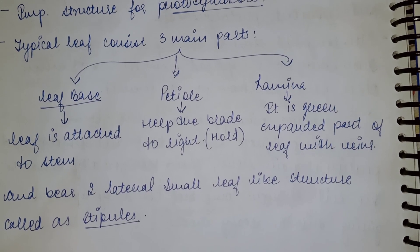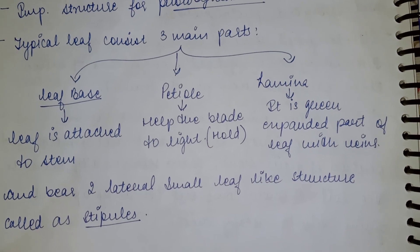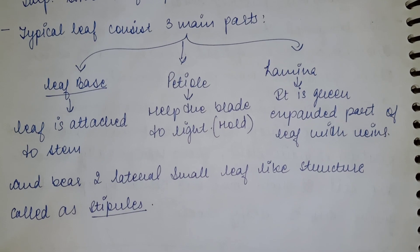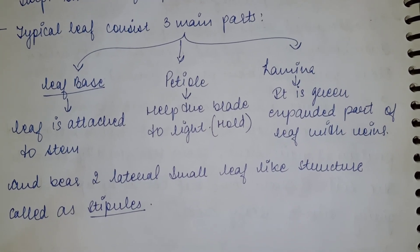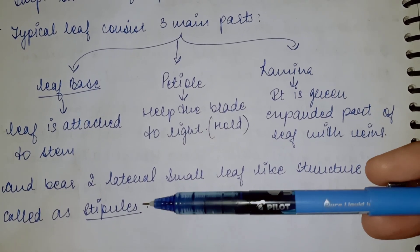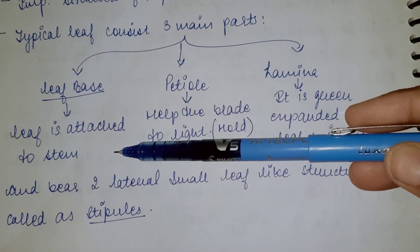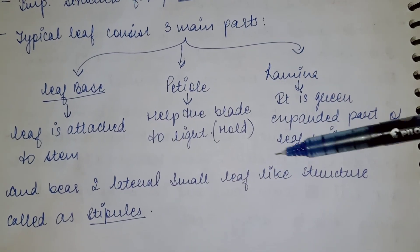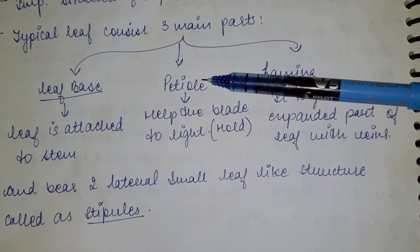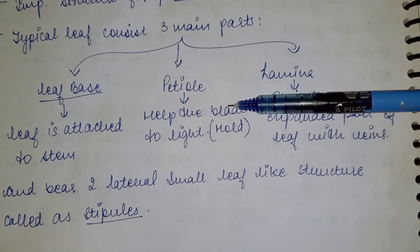Moving forward, a typical leaf has three main parts: the leaf base, the petiole, and the lamina. The leaf base is attached to the stem and bears two lateral small leaf-like structures called stipules. The petiole helps to hold the blade.